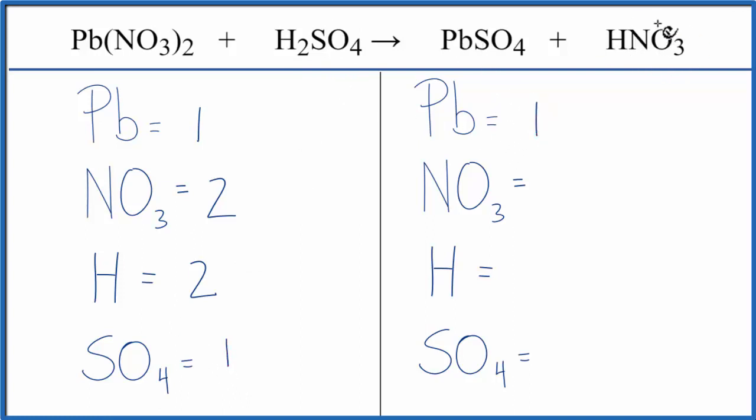1 lead, 1 nitrate, 1 hydrogen, and then 1 sulfate. So you can see we can count much quicker when we think of these polyatomic ions as one thing, as long as they appear on both sides.